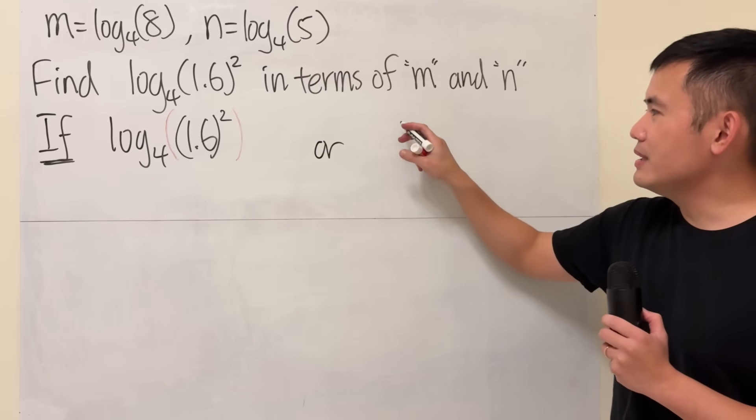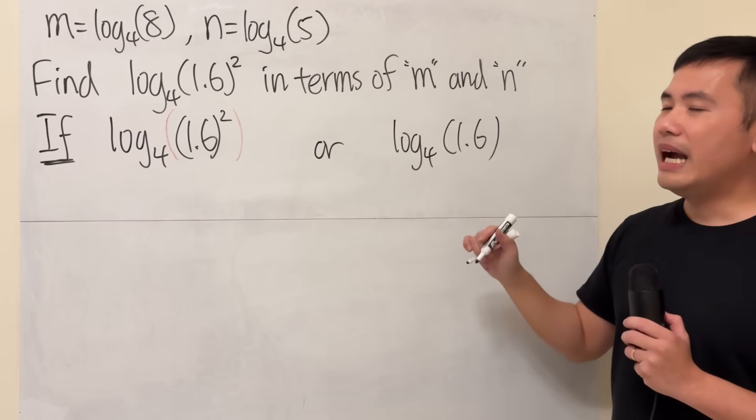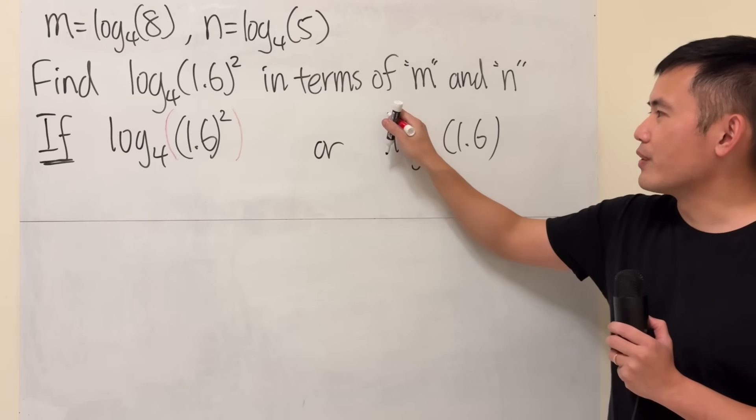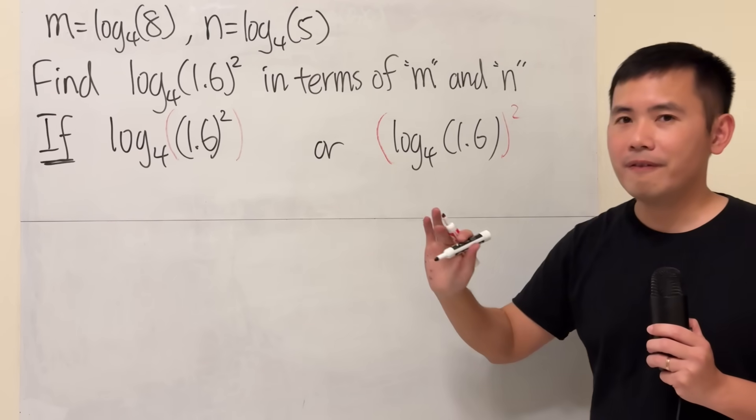Because otherwise, it does look like if we just have log base 4 of 1.6 and then the square, maybe it's for the whole thing like that. And there are two very different things.